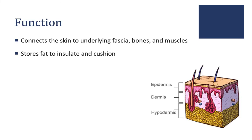The function of the hypodermis is twofold. First, it connects the skin to underlying fascia, which is another type of connective tissue, as well as bones and muscles. Secondly, the hypodermis stores fat in order to insulate the body and cushion it.